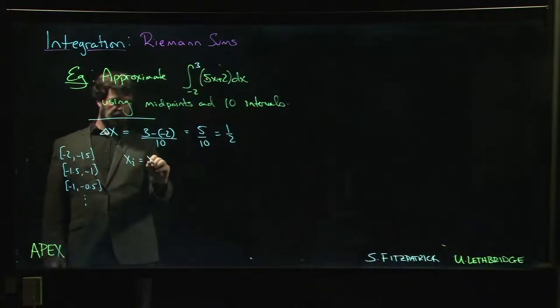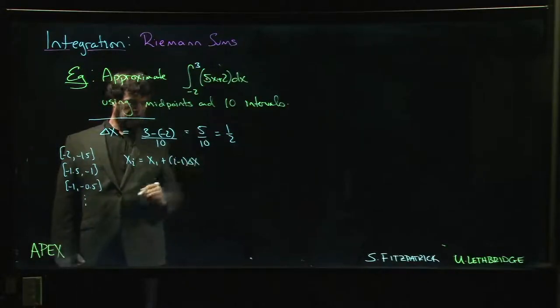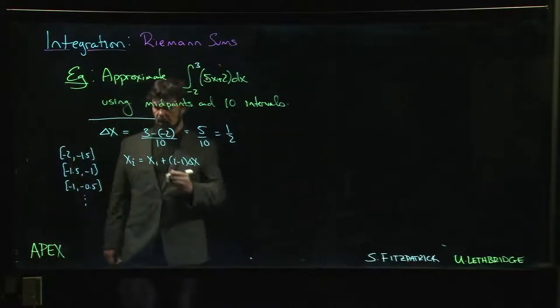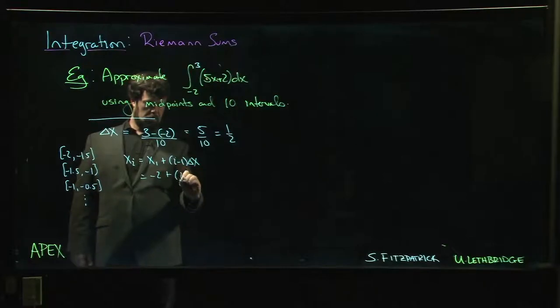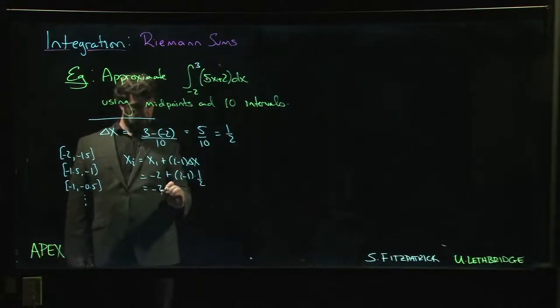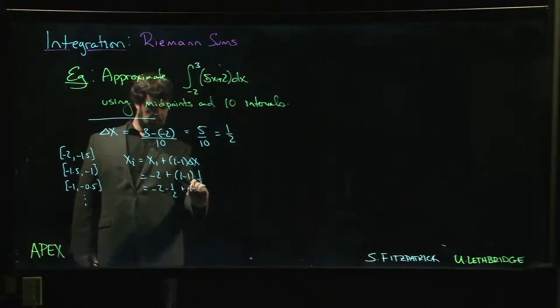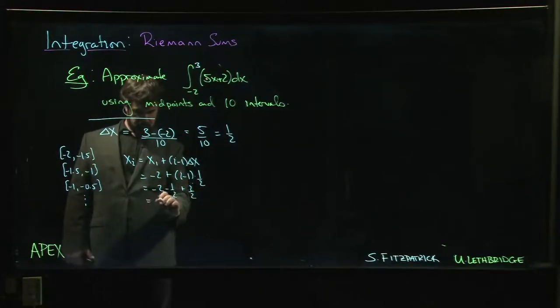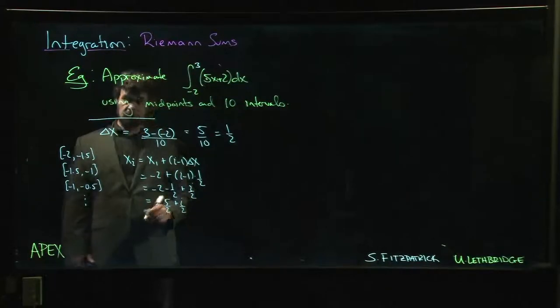So we know that x_i is defined as x_1 plus i minus 1 times delta x. So x_1 is minus 2, i minus 1 times 1 half. So that's minus 2 minus 1 half plus i over 2, so minus 5 halves plus i over 2.